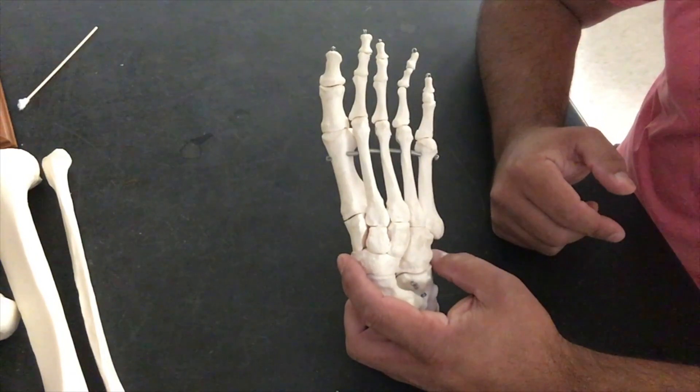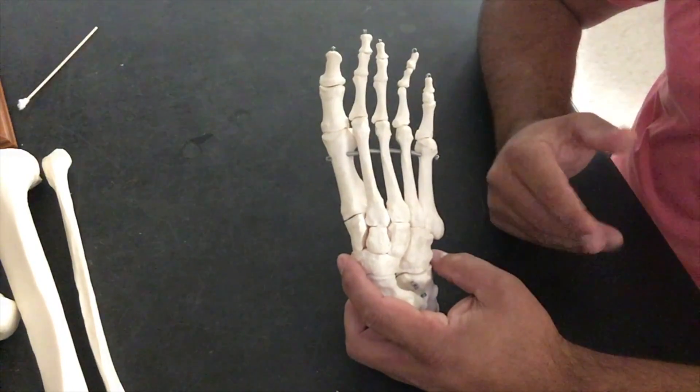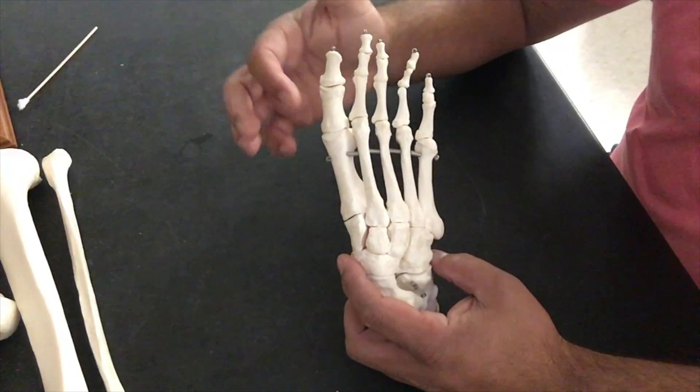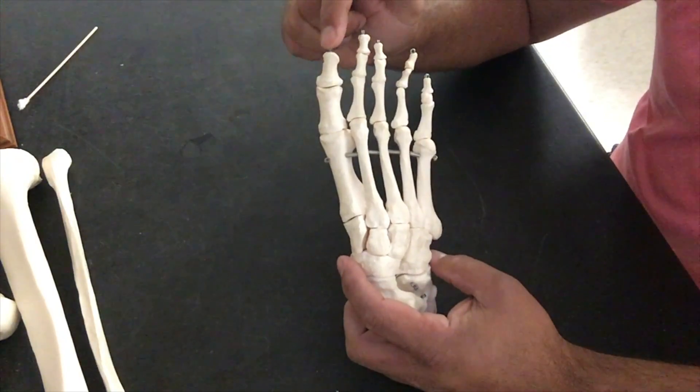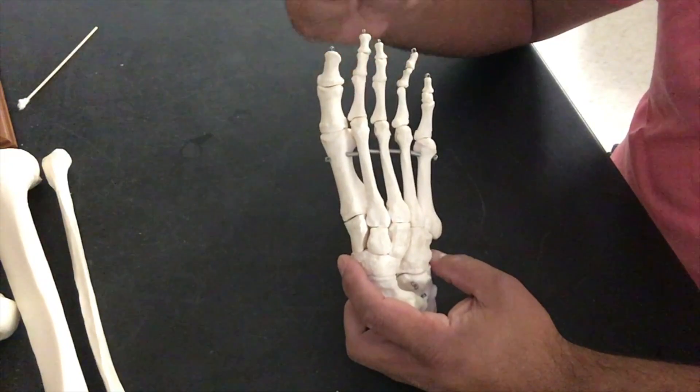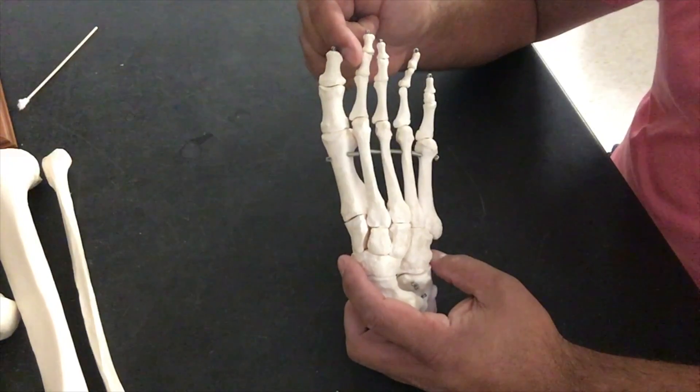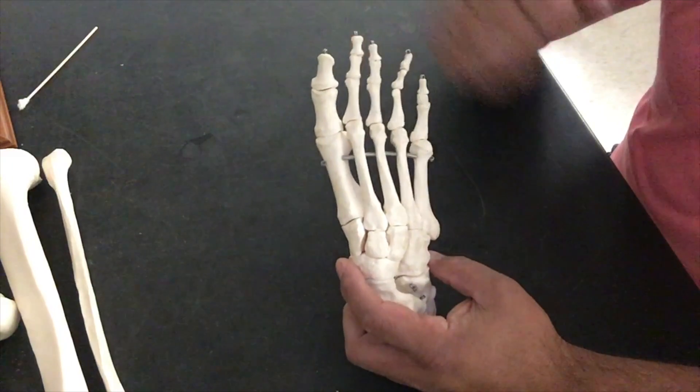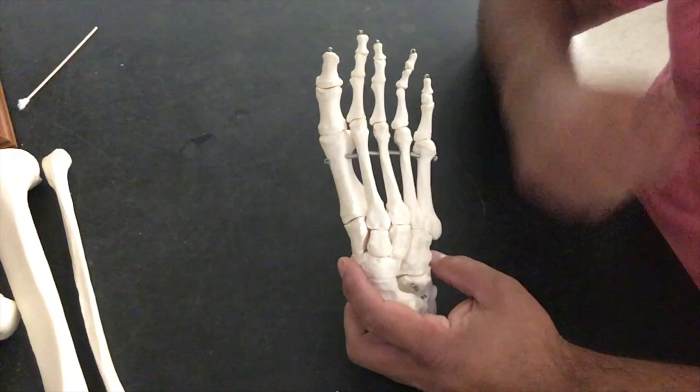And again, they're directional terms based on close or far from that joint. So we have our proximal phalange, distal phalange. Proximal, middle, distal phalange. So there's our phalanges.